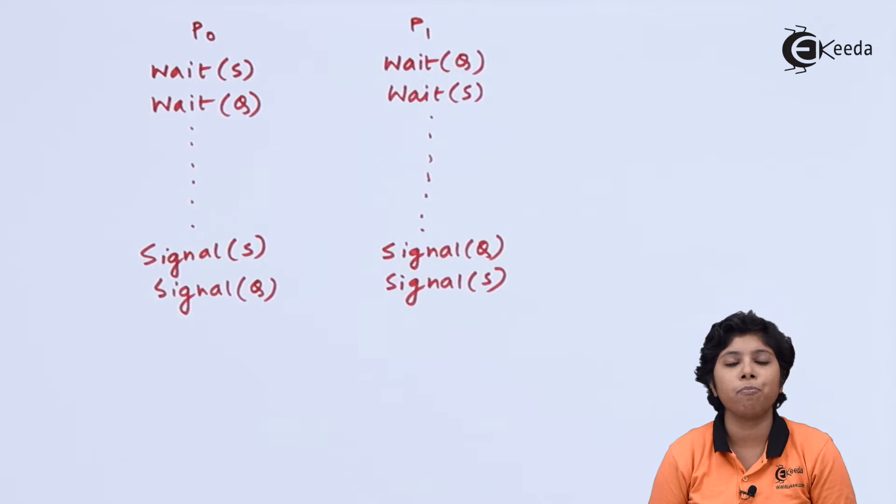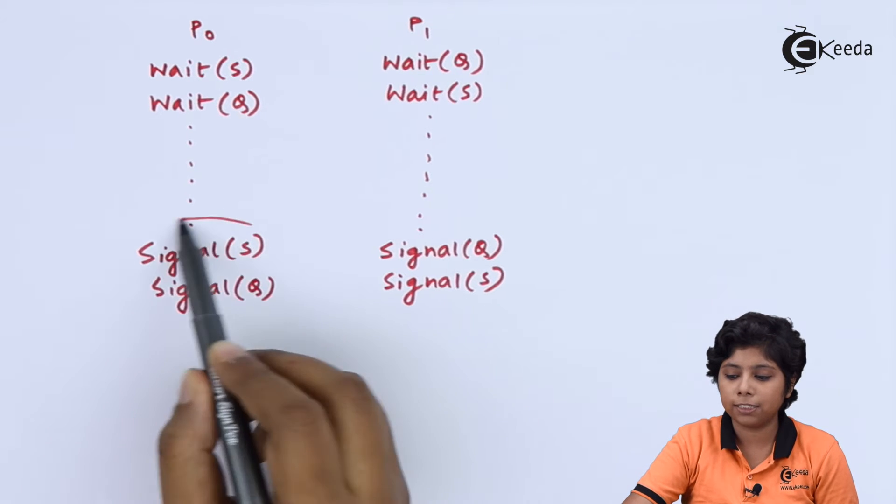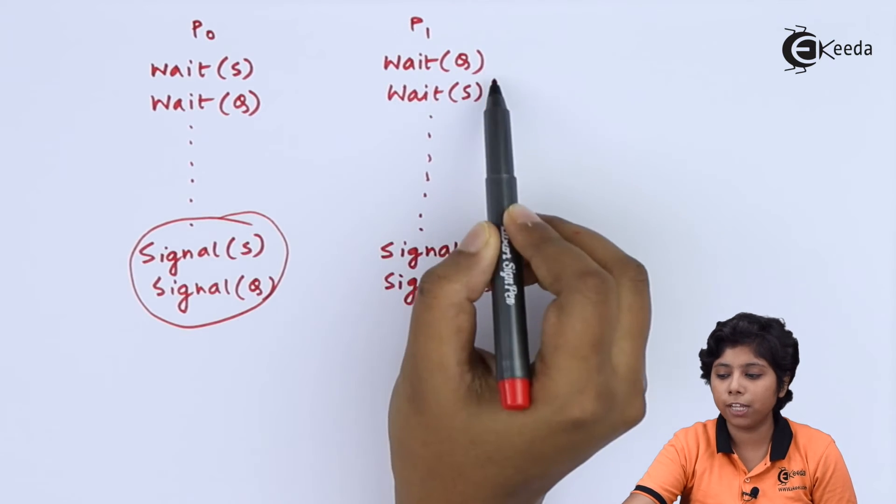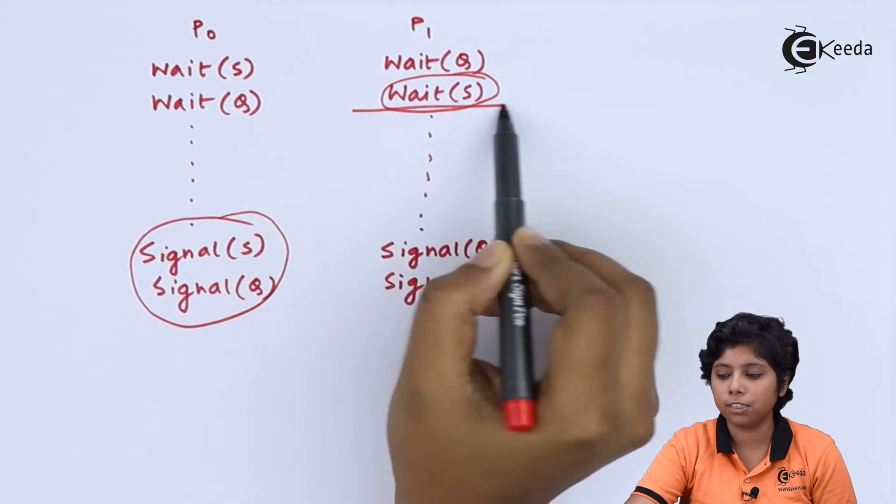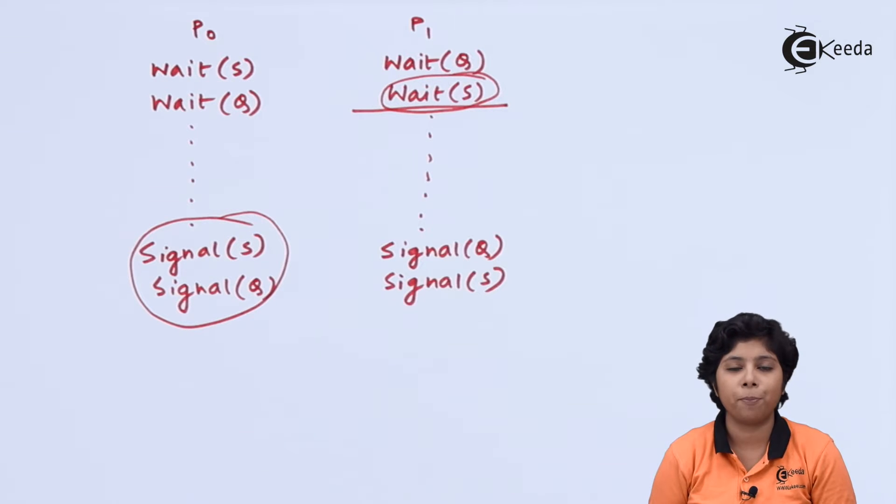Same goes with P1 releasing the semaphore Q and P0 wanting the semaphore Q. So this signal part is done here, but before that P1 is wanting semaphore S to get operated. So the situation is said to be deadlocked, where the two processes are waiting for the processes that are actually in the other process execution.